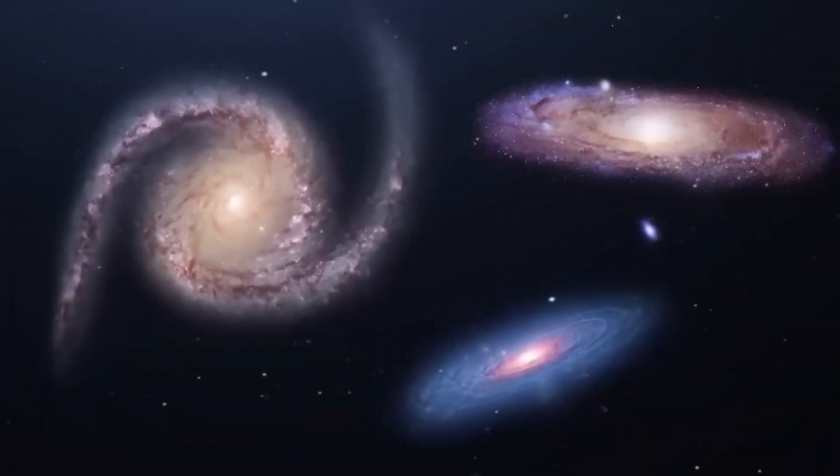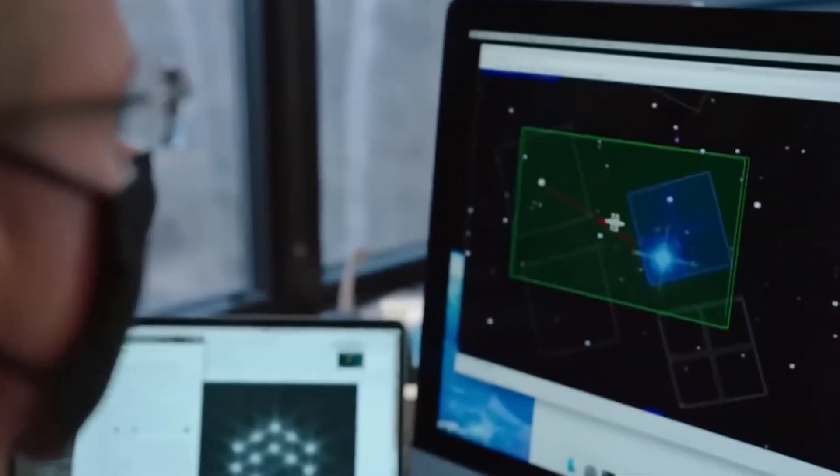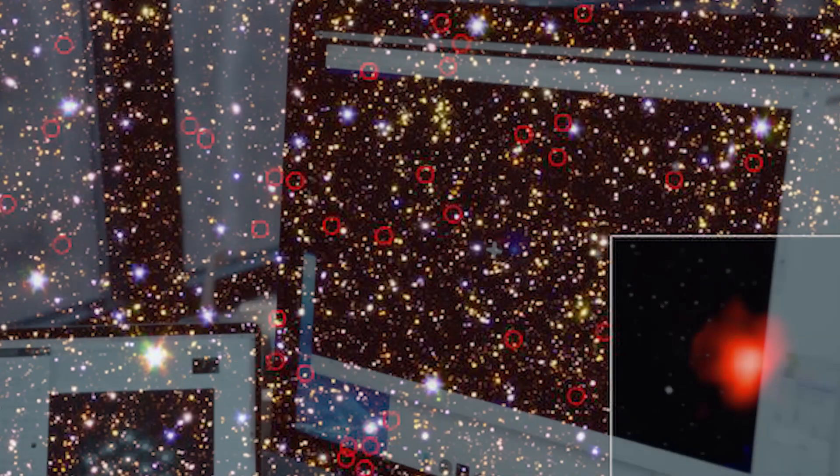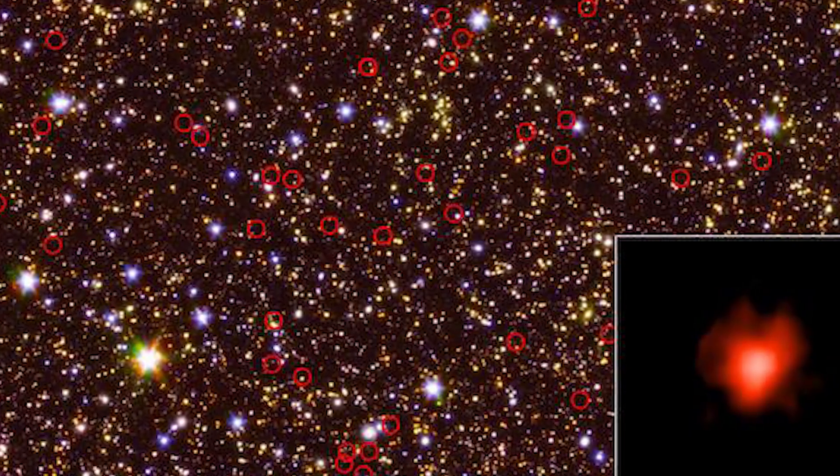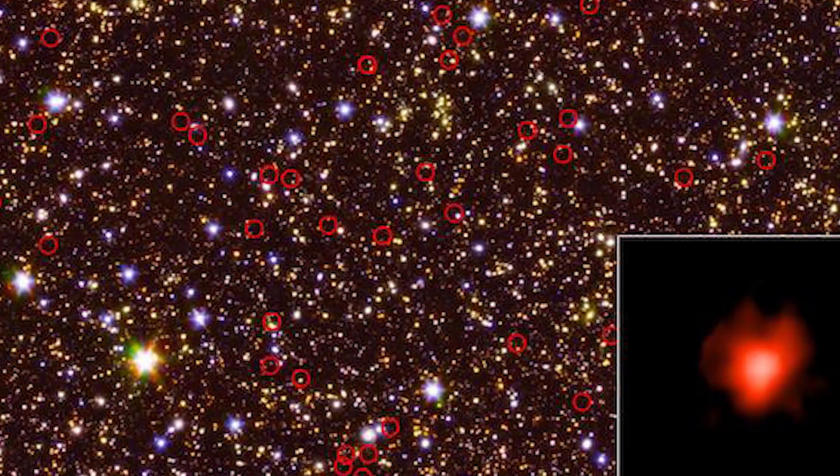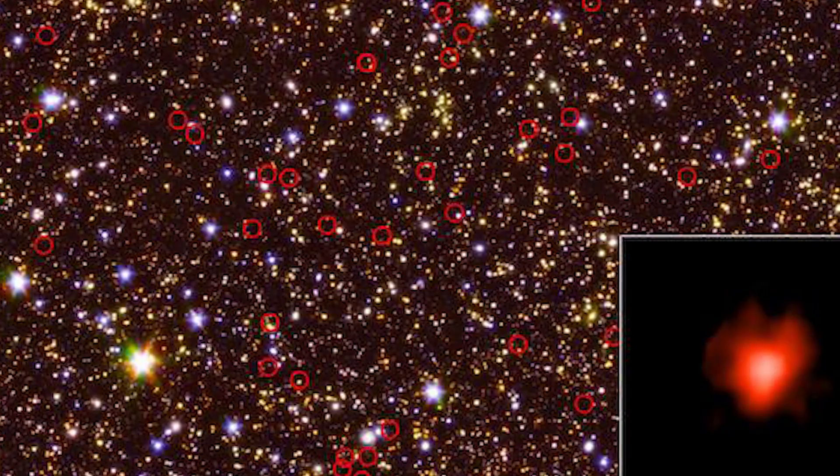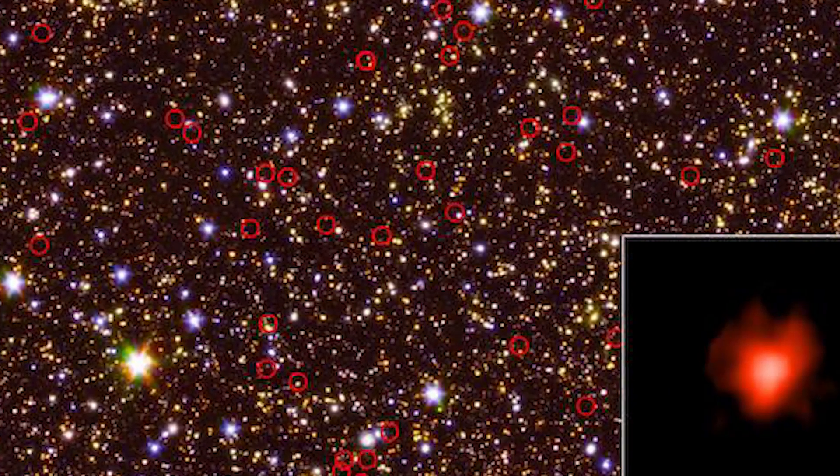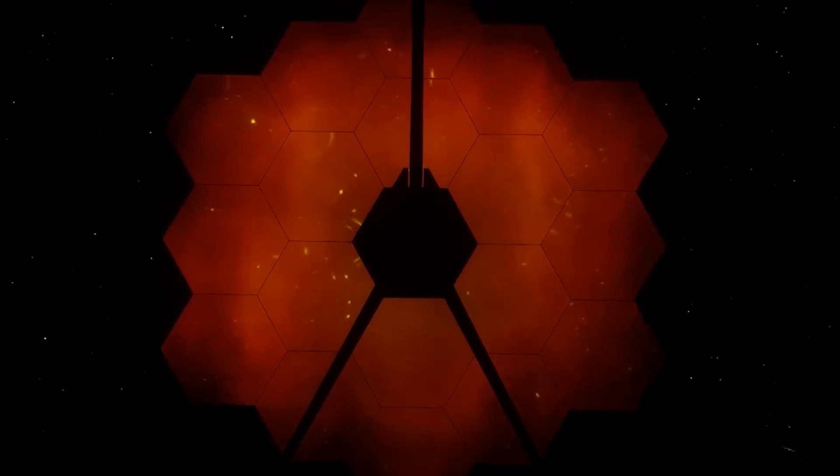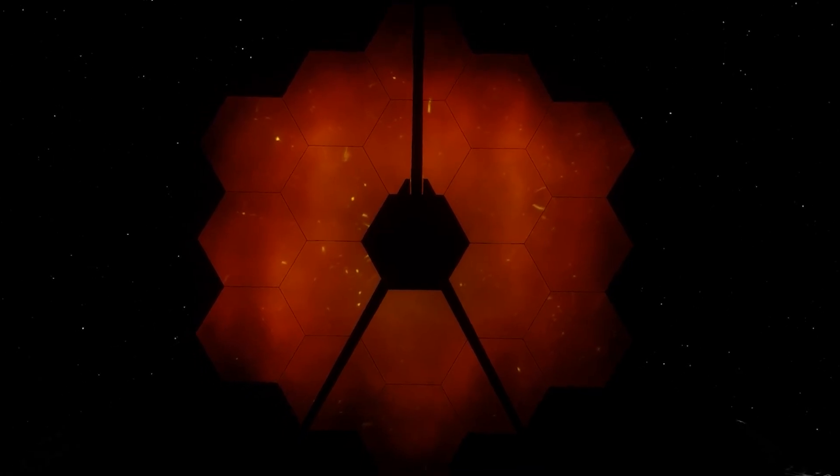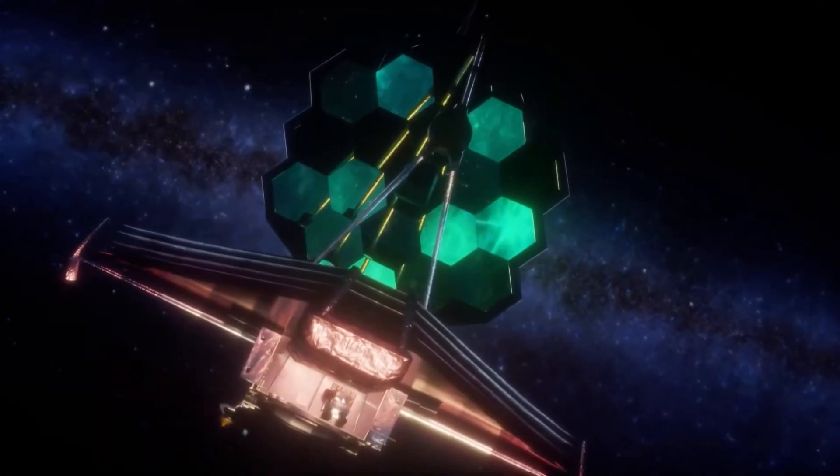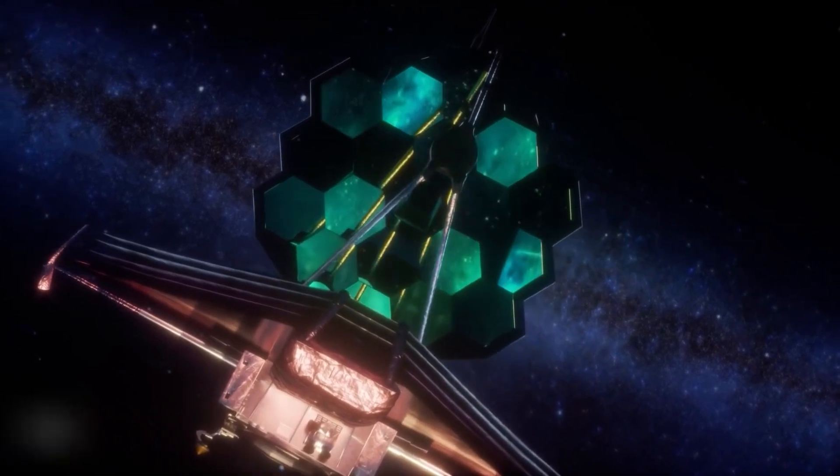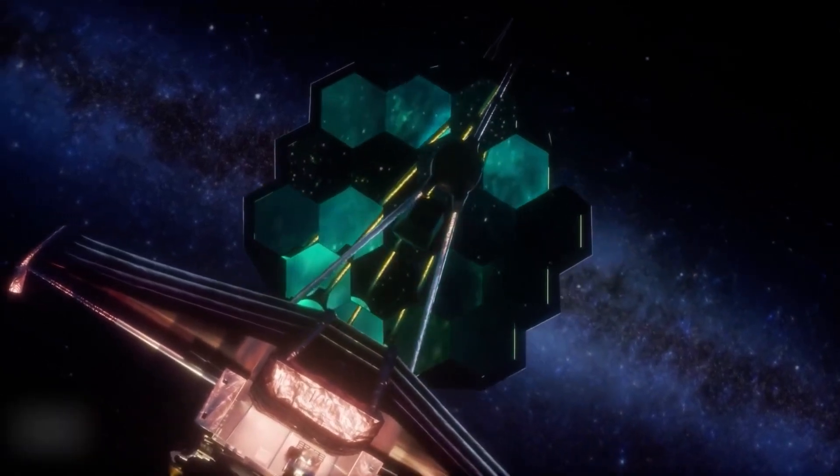Another stunning discovery stumped scientists when researchers found primordial galaxies at the edge of the universe. They were skeptical about their authenticity. Some thought they might be nearby galaxies in disguise, so they shared the data with other scientists around the world hoping for the best. Amazingly, the James Webb Space Telescope confirmed that these ancient galaxies are real. Thanks to this revolutionary telescope, we can now observe the oldest galaxies ever seen.